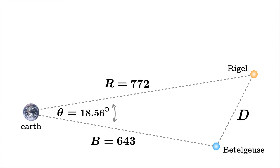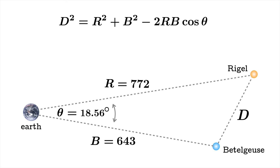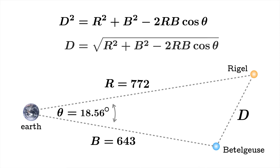Let's give names to these distances and the angle in between: r, theta, and b. The reason is we can write out the law of cosines in a more readable way without the numbers cluttering the scene. Then d is going to be the square root of this quantity, and we just need to work out what this is.